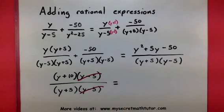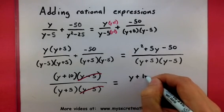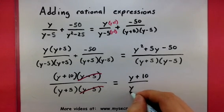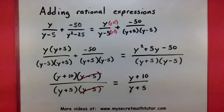Now it looks like the only thing we're left is a y plus 10 in the top and a y plus 5 in the bottom. So now we've added together the two rational expressions and we've simplified it as much as possible.